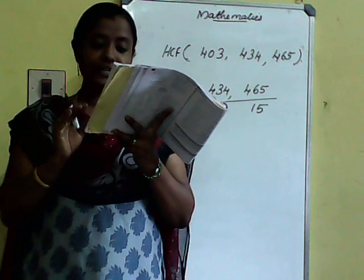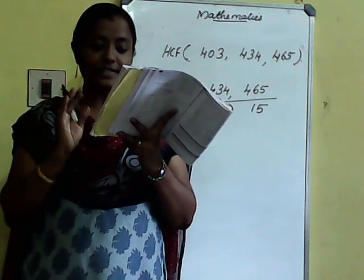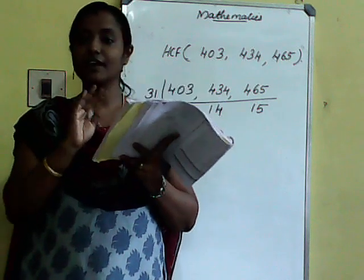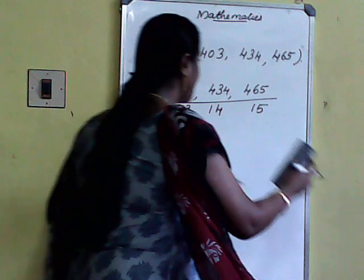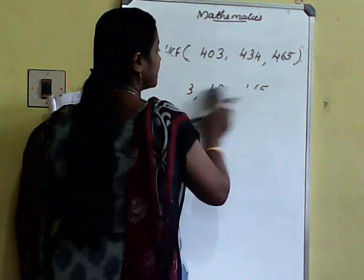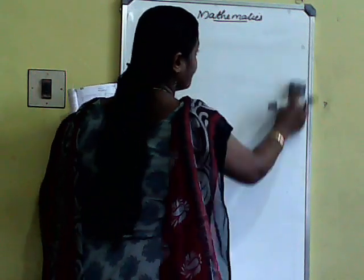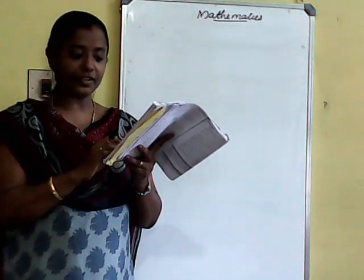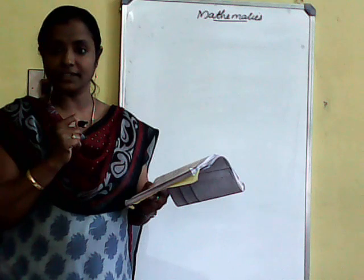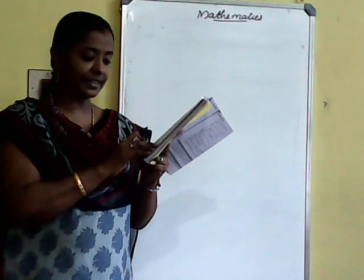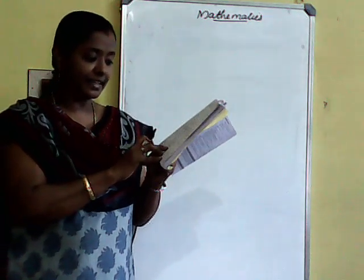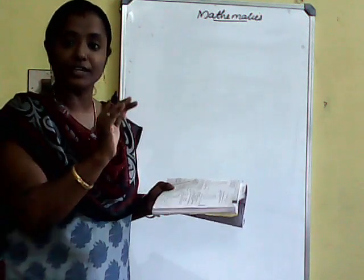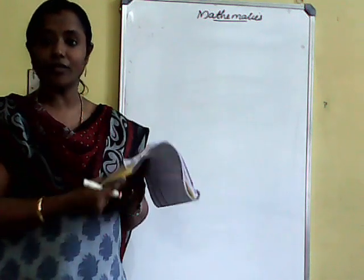8th problem: Find the least number which when divided by 6, 15, and 18 leaves a remainder of 5 in each case. Here we use the LCM method. First, we find the LCM of 6, 15, and 18.